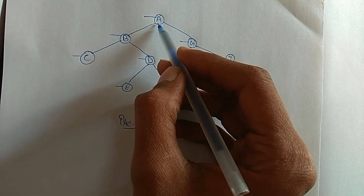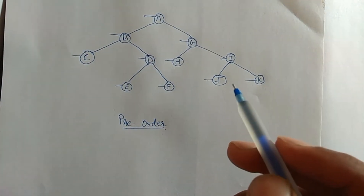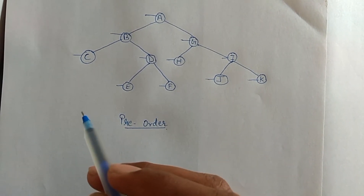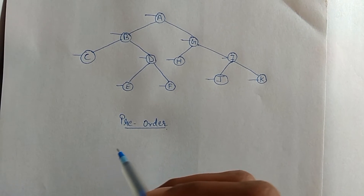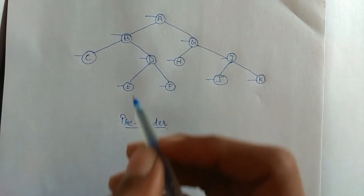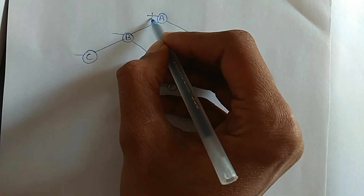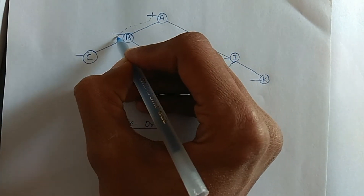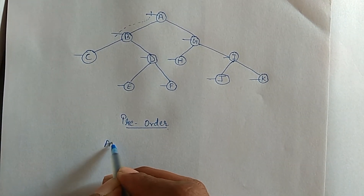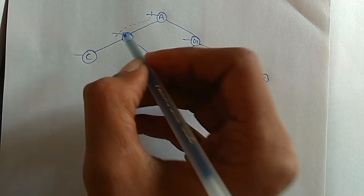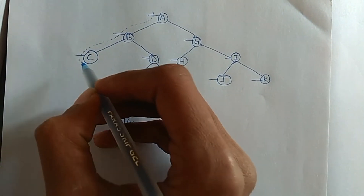It means you have to traverse from the starting node A and traverse the whole tree, and whichever node it intersects the left line, write that node — it will be the pre-order of the tree. Starting from node A, it intersects A and B, so write the pre-order as A, B.